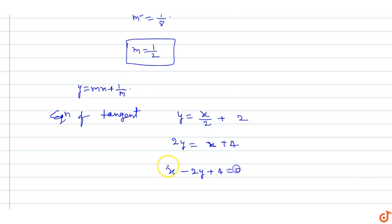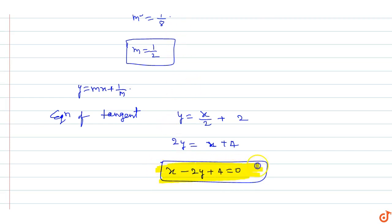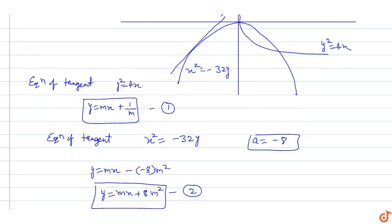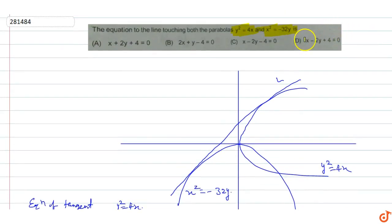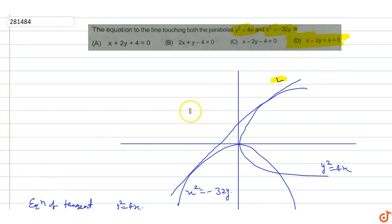So the equation of the line touching both parabolas is x - 2y + 4 = 0. Checking the options, this corresponds to option D, which is the correct answer.